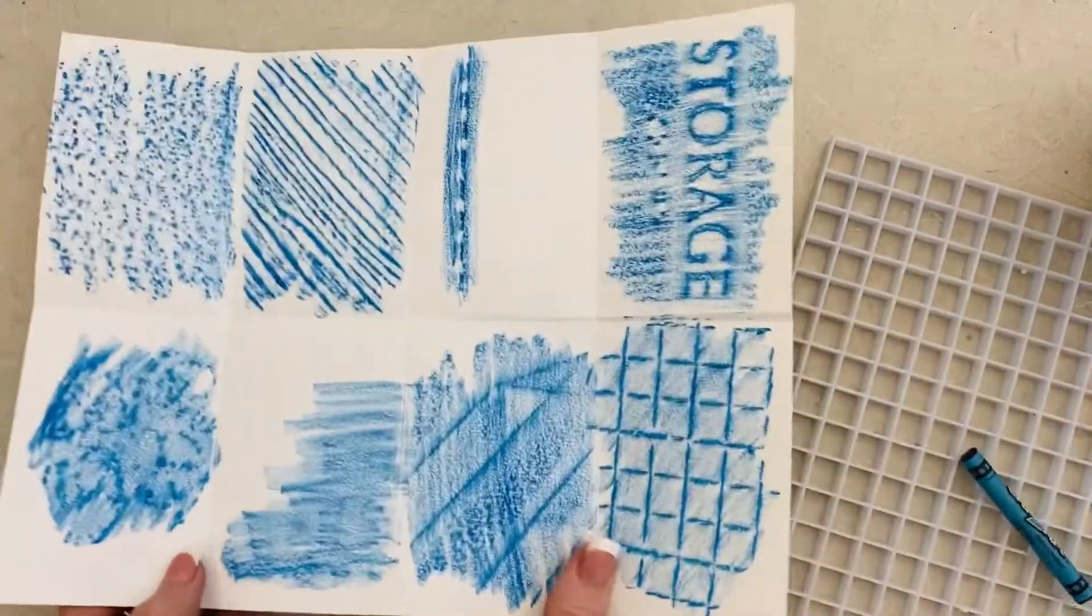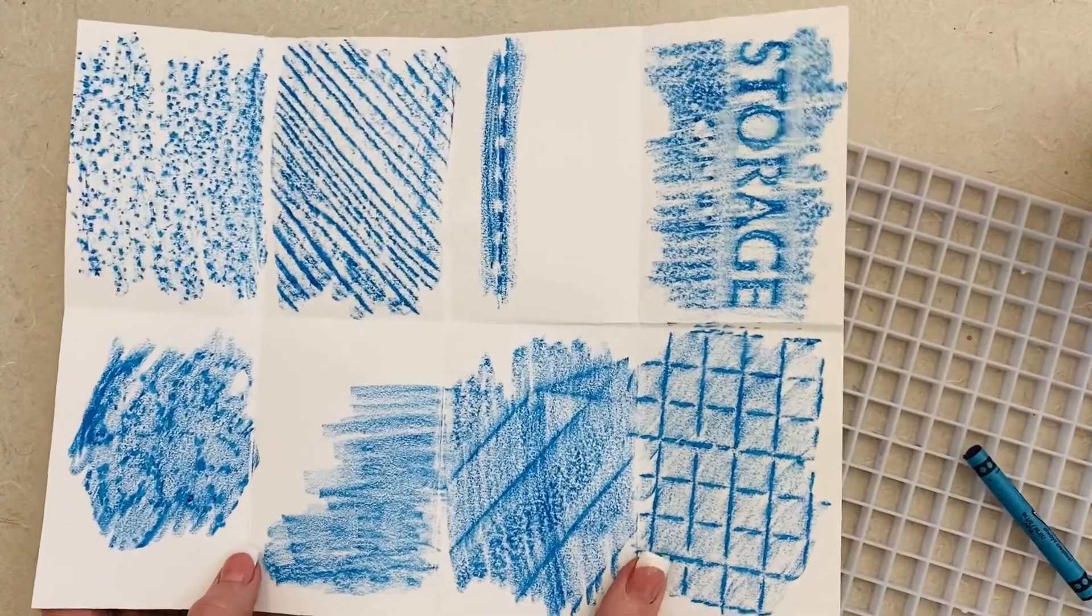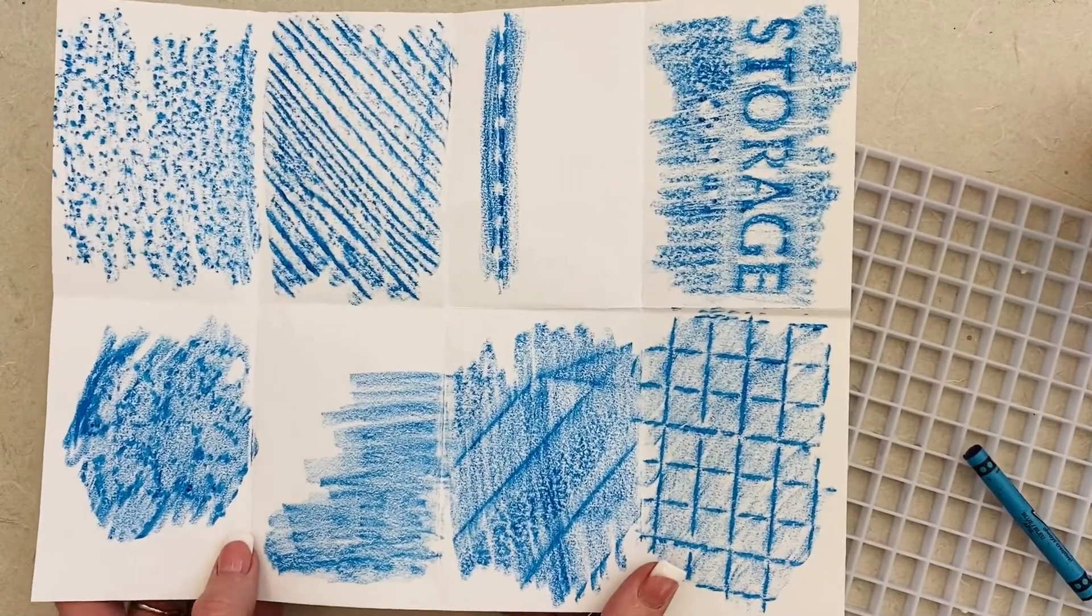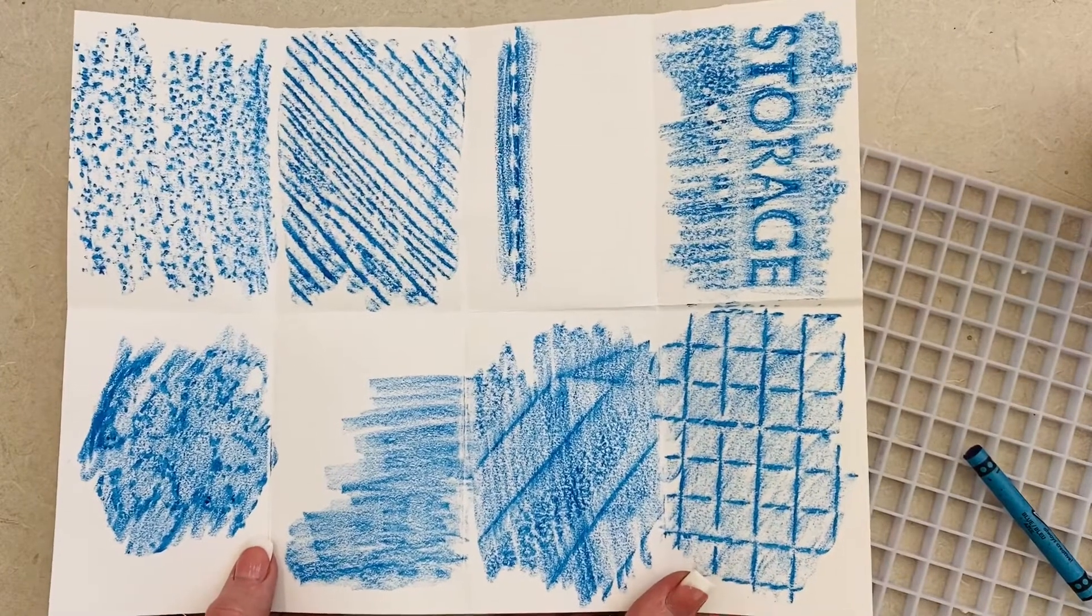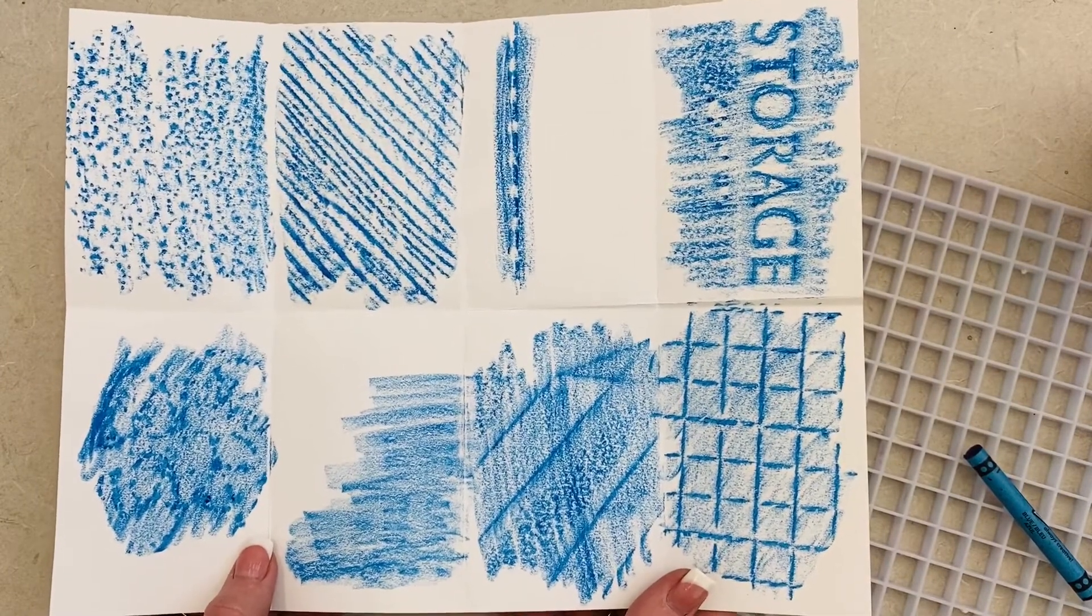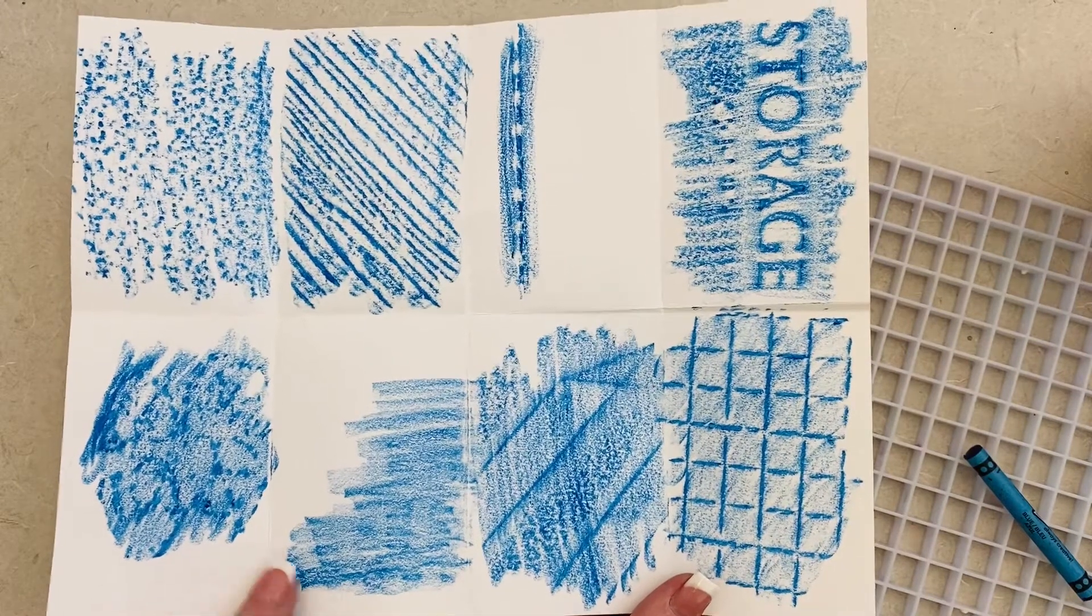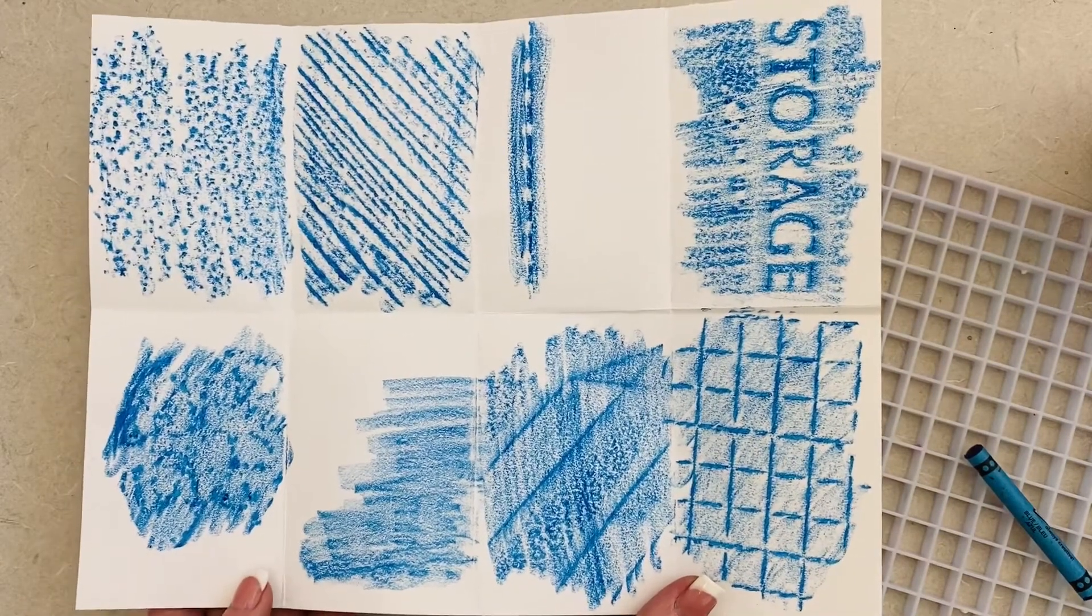All right, guys, so I want you to go around and do a texture scavenger hunt. Like I said, you'll need a piece of paper. You will need a crayon. I would not recommend using white or yellow crayons, it would be a little harder to show up. And I want you to try to find eight different textures.